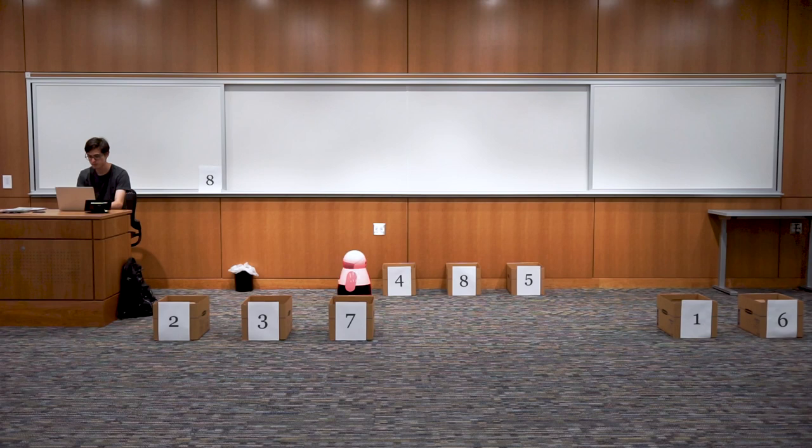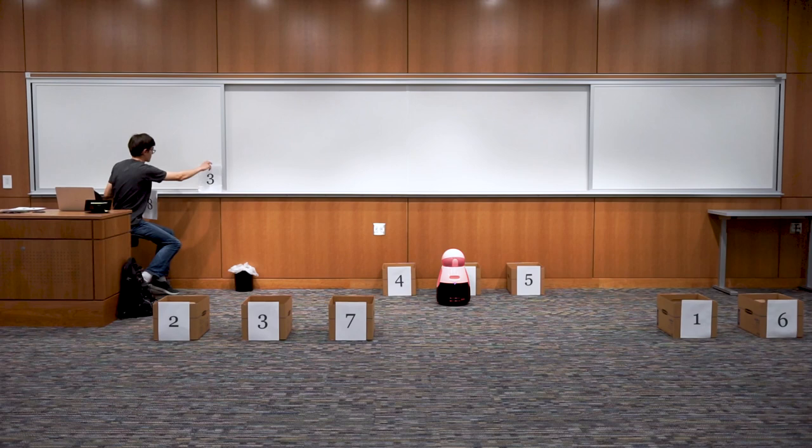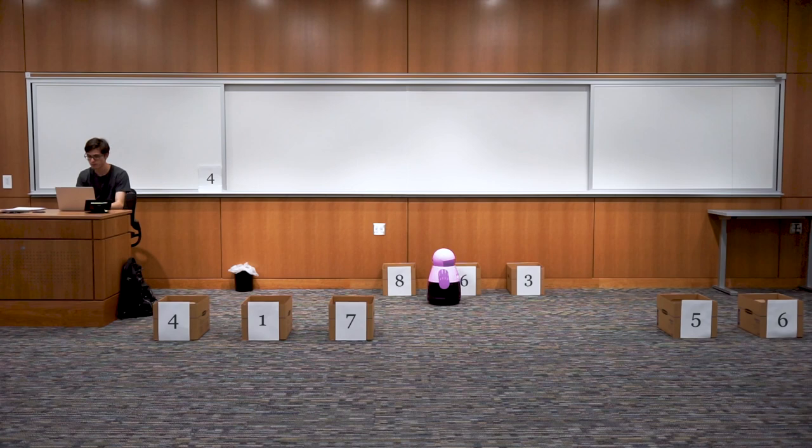Each video starts with the human commanding the robot. While the robot heads off, the human updates a label showing which box they'll need to know after the current command. The labeling of the boxes and the color of the robot are different in each video to help participants tell them apart.